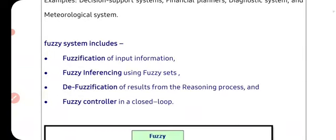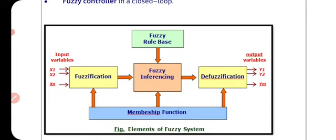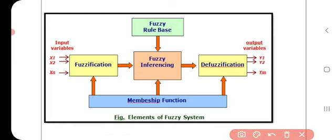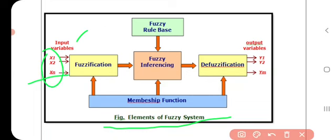A fuzzy system handles numerical data and linguistic data together to solve uncertain problems. The components of fuzzy system include fuzzification, fuzzy inferencing, defuzzification, and fuzzy controller. Looking at the flowchart: on the left-hand side we have input variables in numerical/mathematical form — variables may be x1, x2, ..., xn — these are crisp data which we convert into fuzzy data through fuzzification.